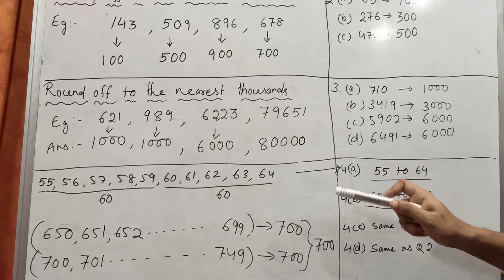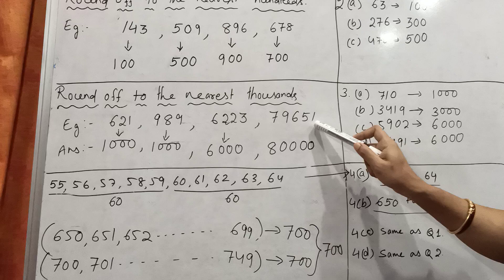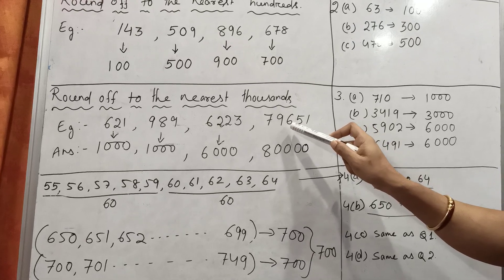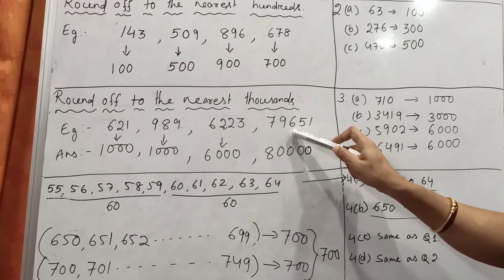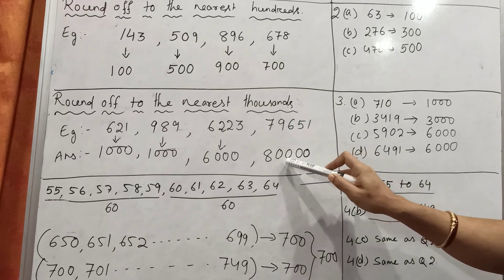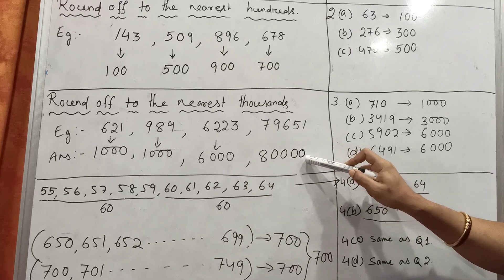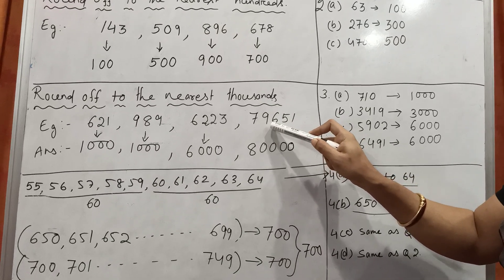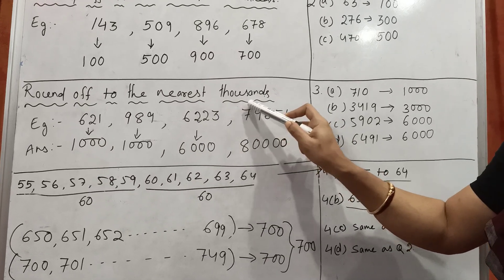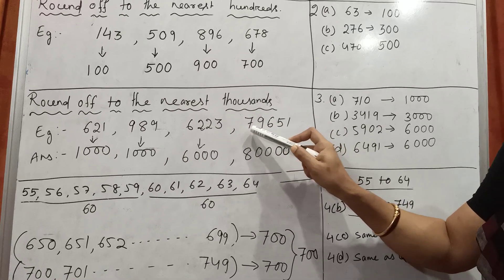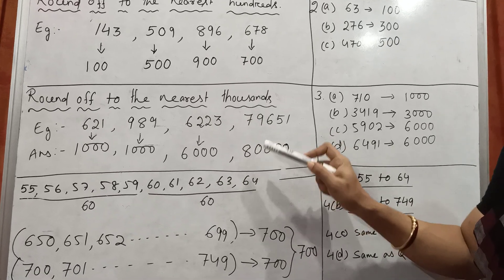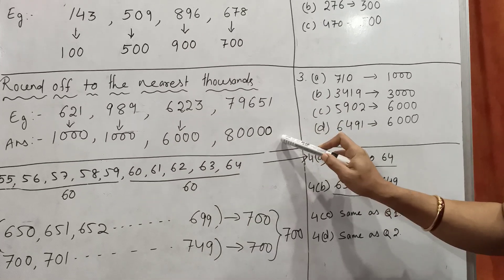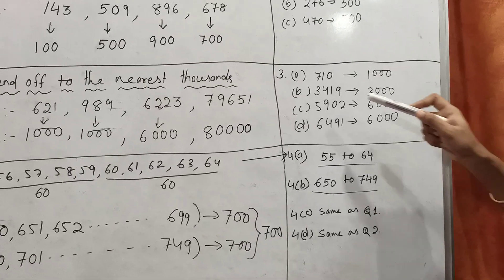The next one is 79,651. This is a 5-digit number. You have to check the hundreds place, which is 6 — more than 5. So the hundreds, tens, and units places become 0, 0, 0 and the thousands digit is increased by 1. In the thousands place, 79 is written, and 79 plus 1 is 80. So 79,651 rounded to the nearest thousand is 80,000.